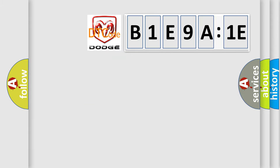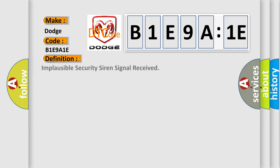So, what does the diagnostic trouble code B1E9A1E interpret specifically for Dodge car manufacturers? The basic definition is: implausible security siren signal received.